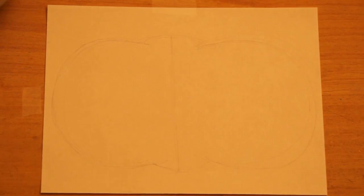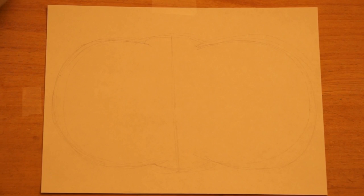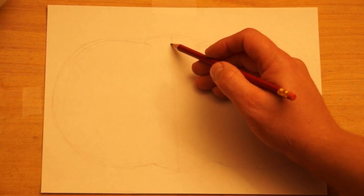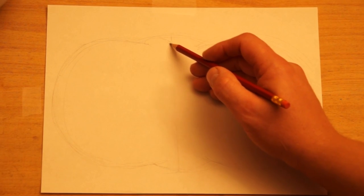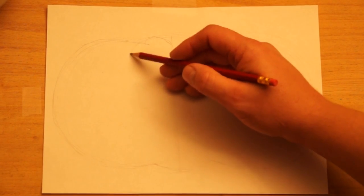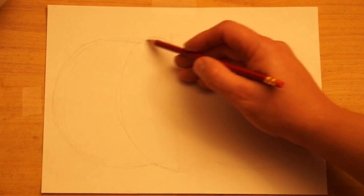And pumpkins, the way they are, they're kind of segmented. They're appearing in segments. So we're going to kind of break this up into different segments. So right here in the middle, I'm going to make a curve and go around to the bottom, just like that.